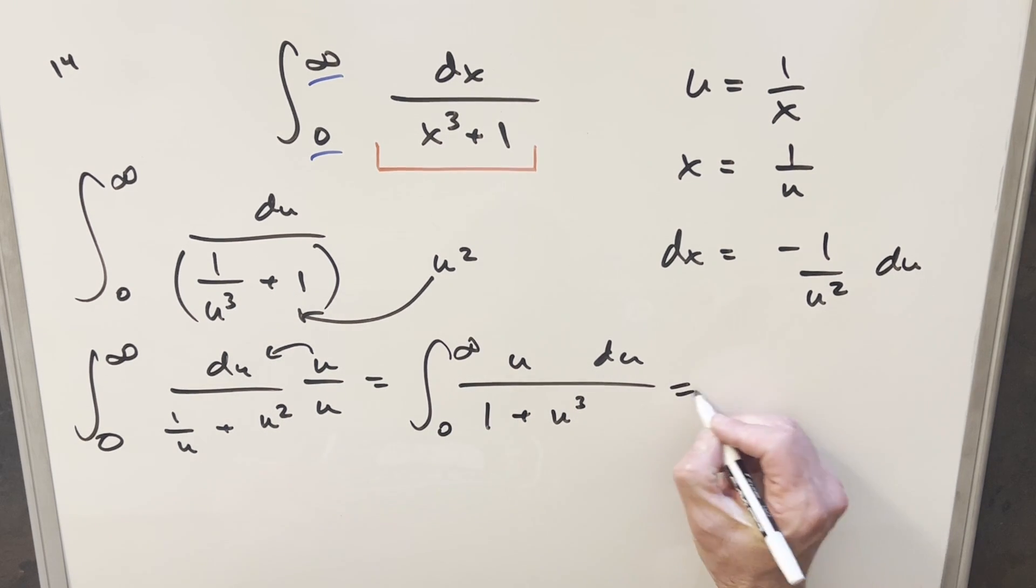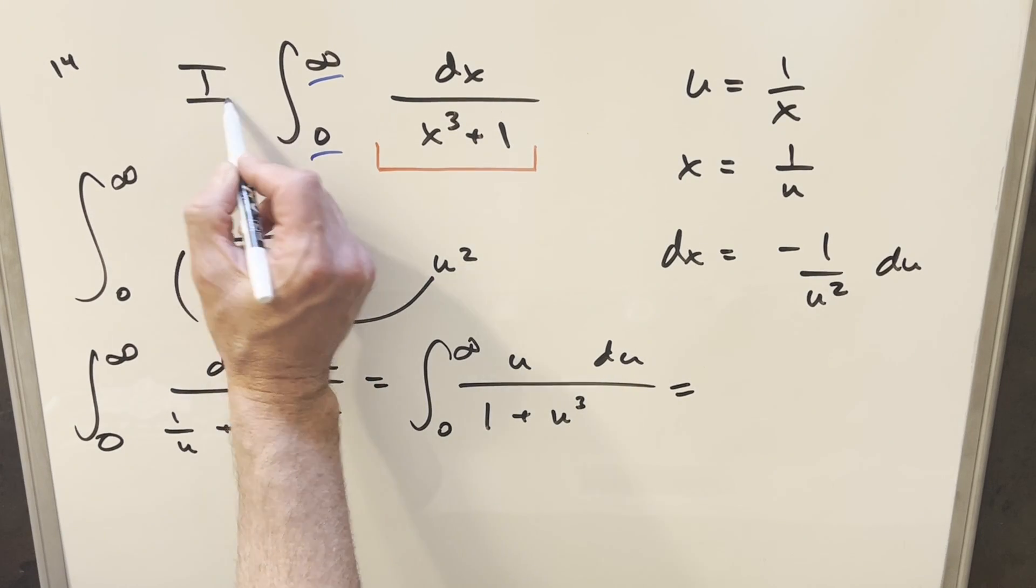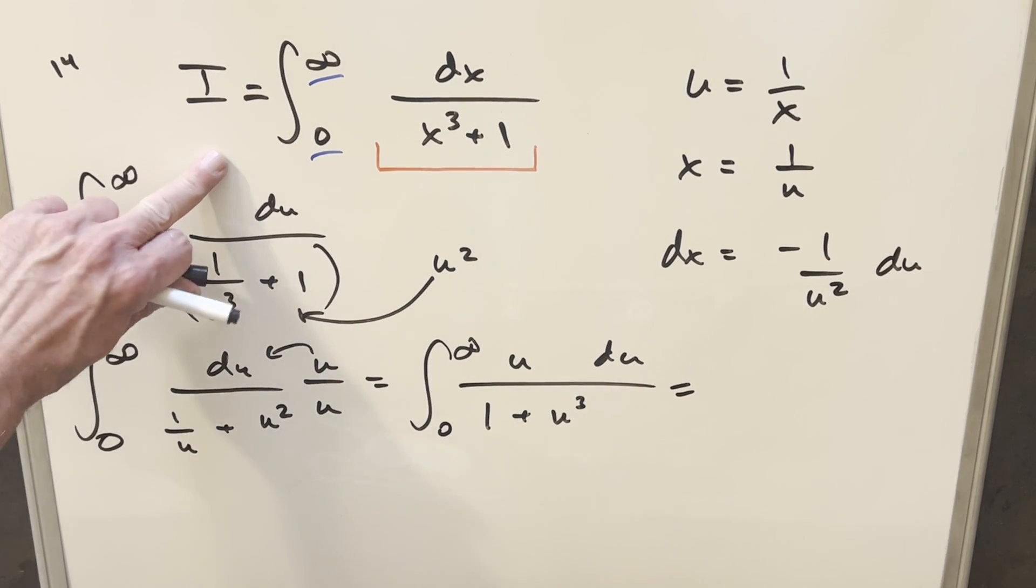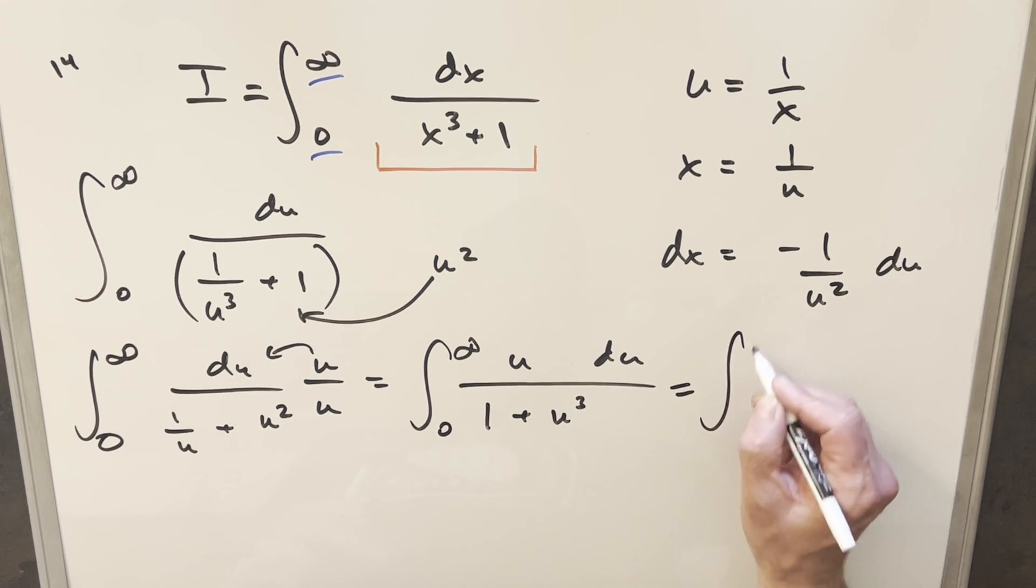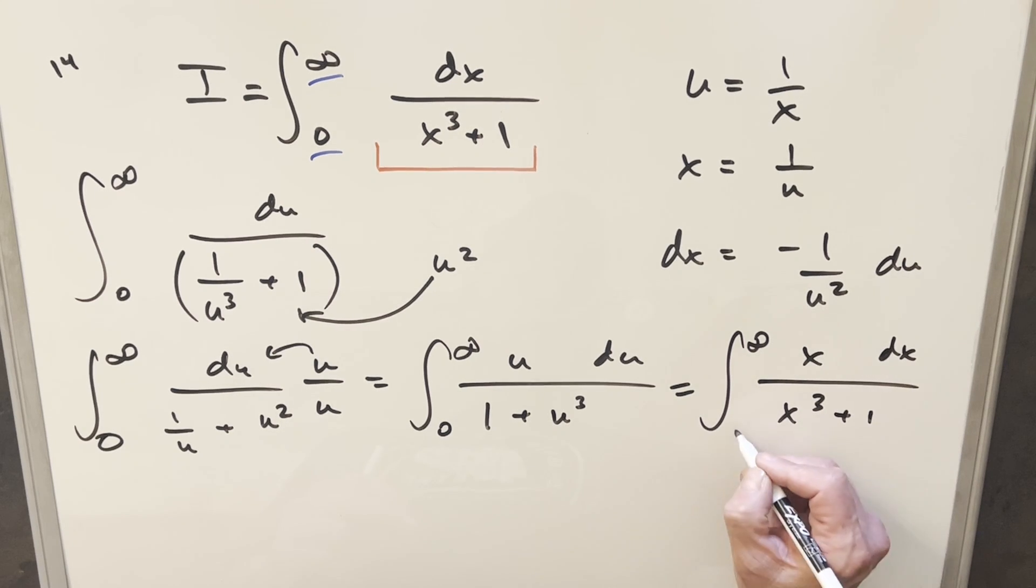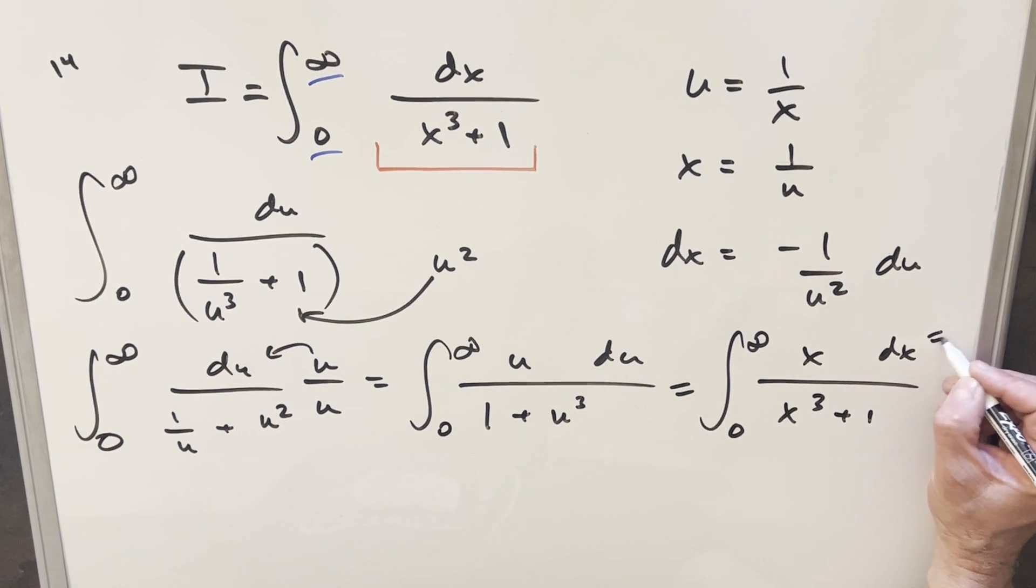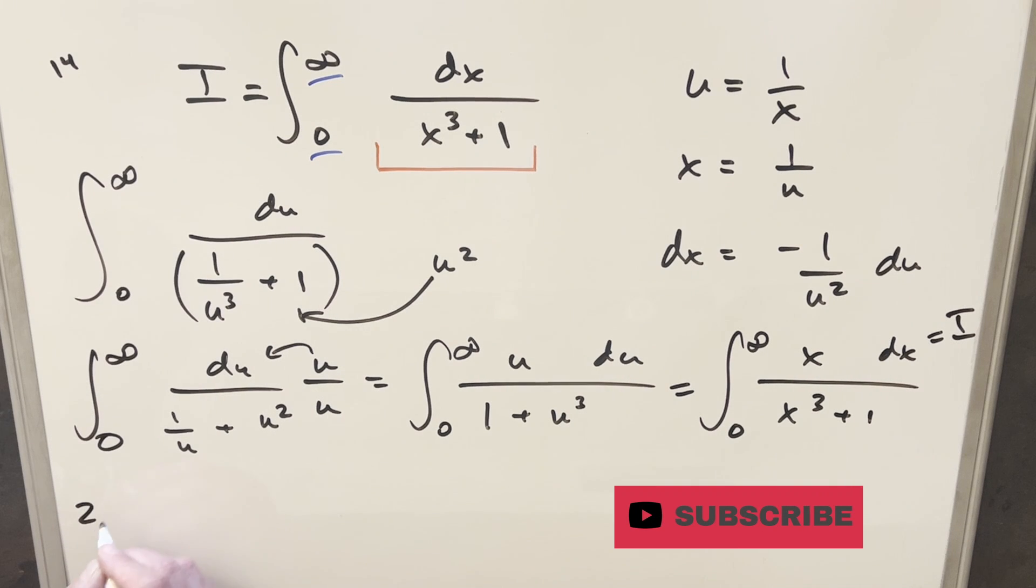But now what I can do is a variable change. Let's just change it back to x because what I'm trying to do is add it back to our original. That's the whole strategy here. So this is original we'll call i, and then everything along the way is i. So when we write this in x, this is going to become x dx. I'll change the order, so we have this as x cubed plus 1. And again, this here is still i, so we'll add this together with the first one.